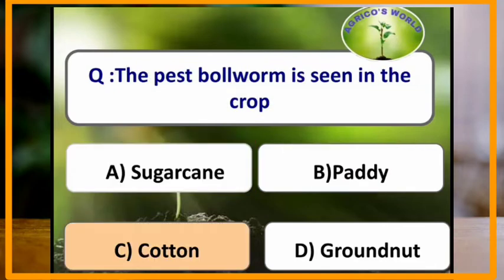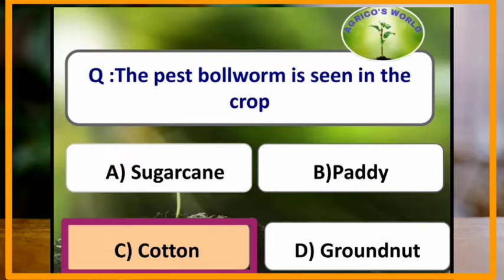The pest bollworm is seen in which crop? Bollworms are pests which are seen in cotton crop.